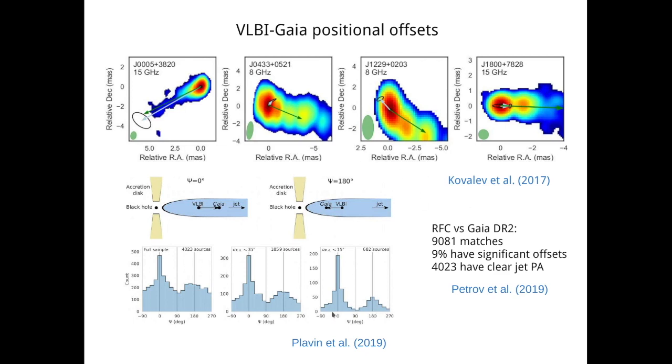What has been shown in these papers is that when you plot the distribution of the angle, which is called psi here, between the jet direction and the VLBI-Gaia offset vector, you can see that there are clear and significant peaks at psi equals zero and psi equals 180. These two cases correspond when the Gaia photo center is shifted downstream from the radio core, or upstream from the radio core. And if you strengthen the constraints on the uncertainties of these vectors, you see that the two peaks at zero and 180 become more and more significant, more and more prominent.